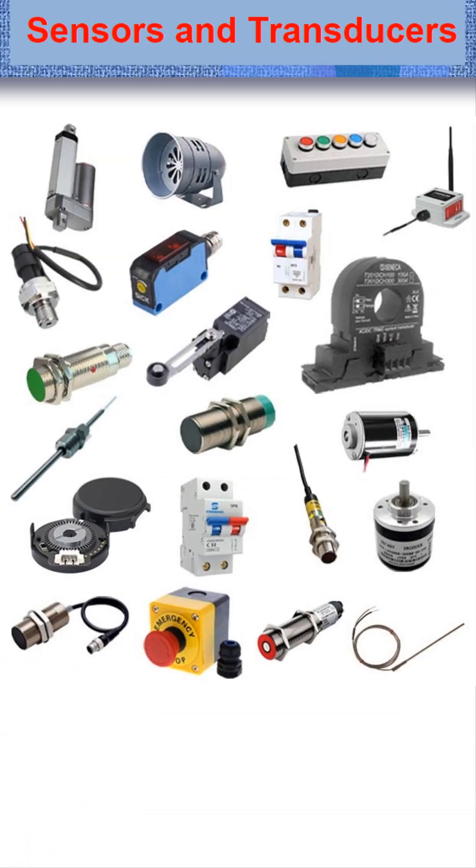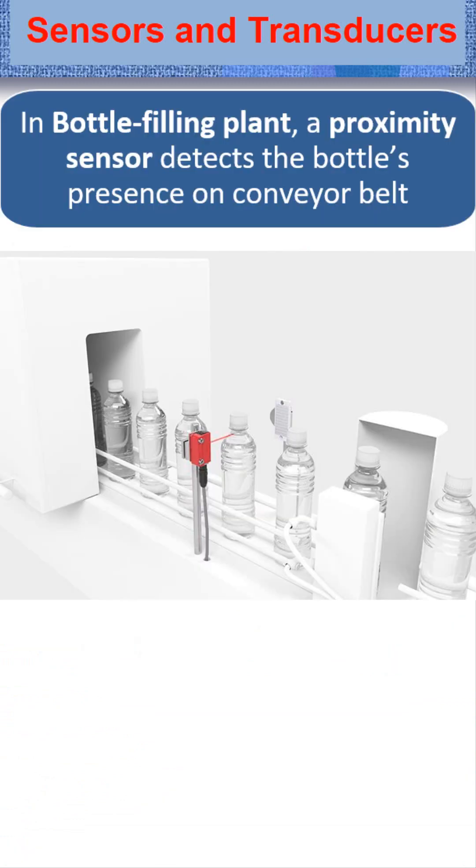Let's explore a few real industrial sensor applications. In a bottle filling plant, a proximity sensor detects the bottle's presence on the conveyor belt.